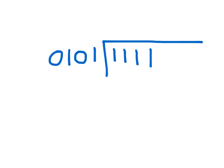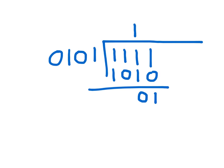We try the 2's place: we multiply 2 times 5 and get 10. We subtract: 1 minus 0 is 1, 1 minus 1 is 0, 1 minus 0 is 1, and 1 minus 1 is 0. What we are left with is 5 into 5, which goes 1 time. So 5 into 15 goes 3 times.